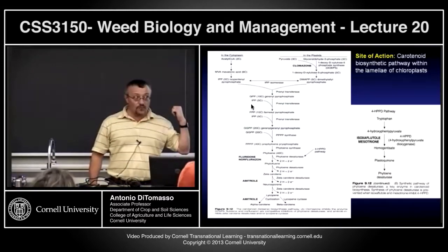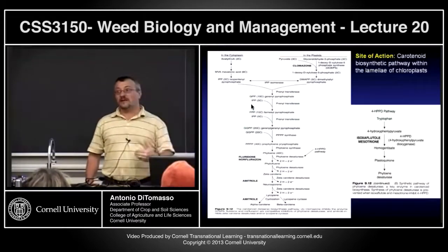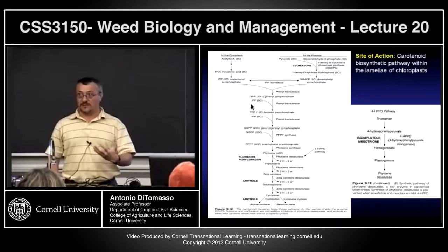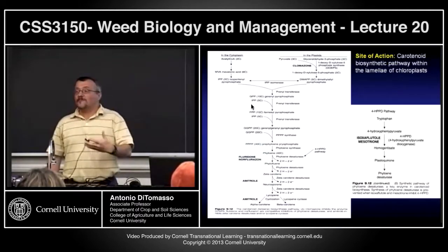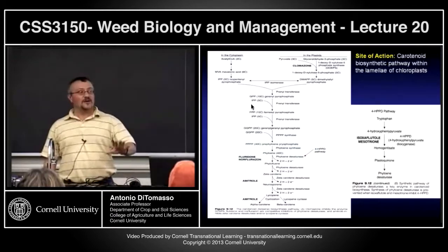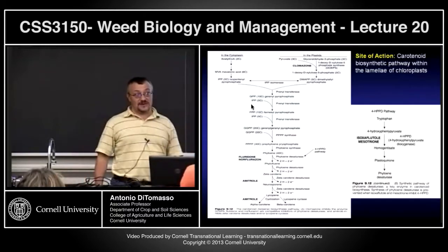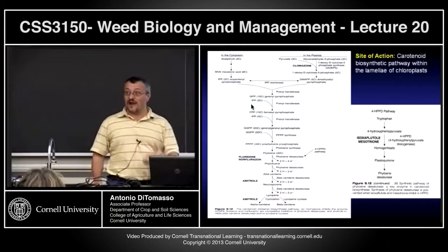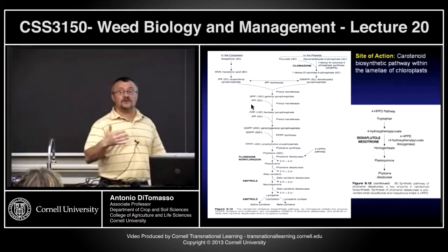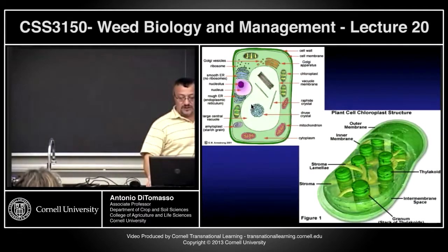The take-home message is that these bleaching-type herbicides affect generally different enzymes within the carotenoid biosynthetic pathway — a pretty complicated pathway — but they affect it in different spots. The end result is the same: you do not have the synthesis or production of carotenoids, which are important to quench the energy from that triplet chlorophyll radical. And if that thing is loose in the cells, I'll also talk soon about paraquat and why paraquat is dangerous — the actual herbicide is a radical. That's why it's so problematic and has very high toxicity for humans and animals.